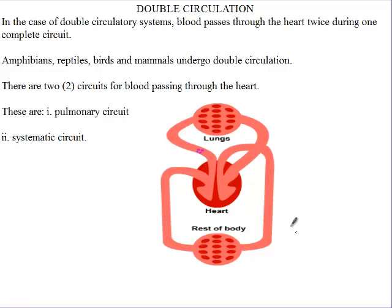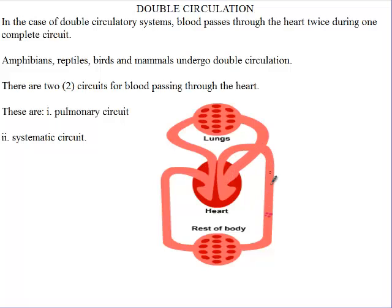Humans and other mammals undergo double circulation. Here, the blood from the body, as you can see — if you follow this pink — it gets into the heart, moves from the heart into the lungs, and then comes back to the heart again before it is sent out to the body.